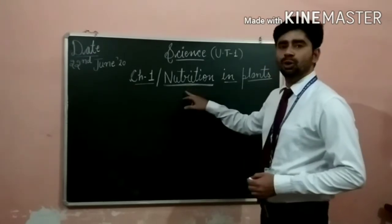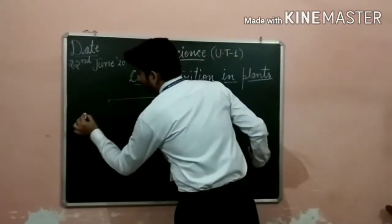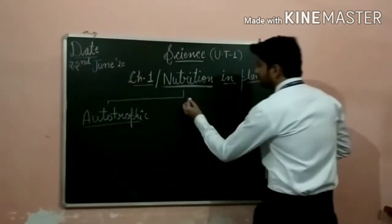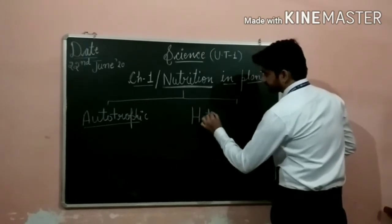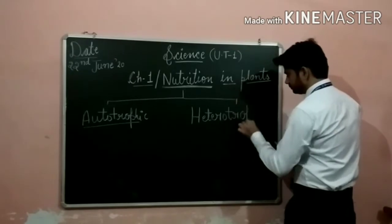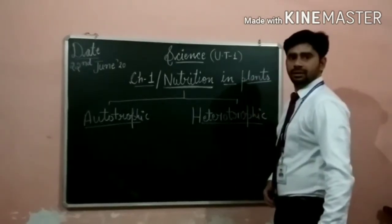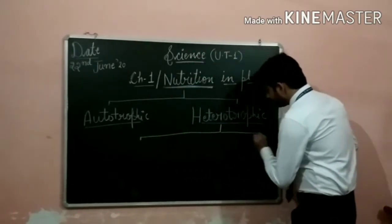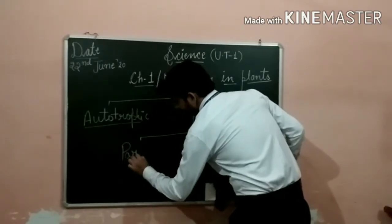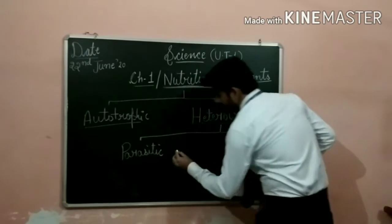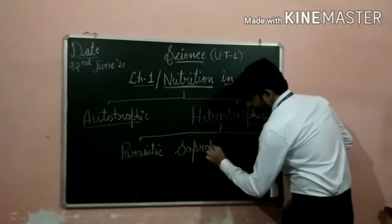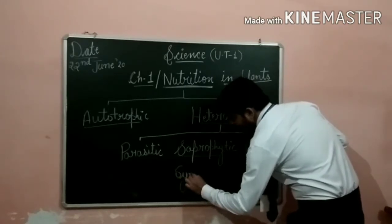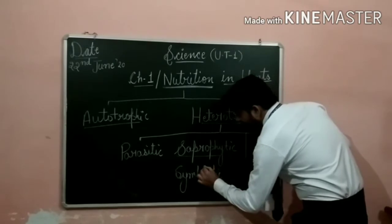Basically, there are two modes of nutrition: number one, autotrophic nutrition, and number two, heterotrophic nutrition. In the heterotrophic category, we have different modes of nutrition — number one, parasitic; number two, saprophytic; number three, symbiotic; and number four, insectivorous.